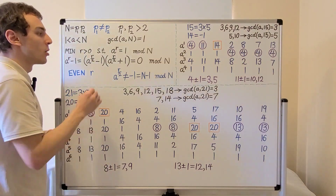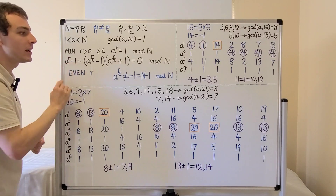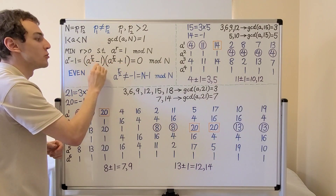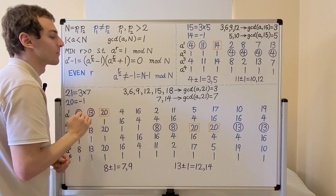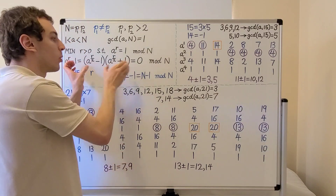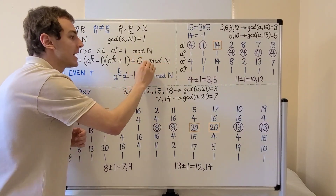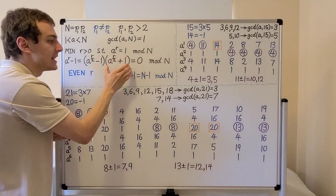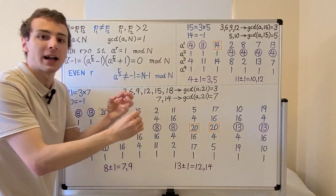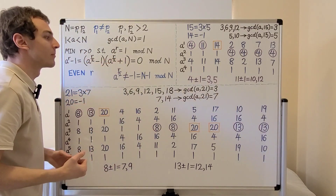Once we have r, we use this relationship to find p1 and p2. We subtract 1 from both sides, giving us a^r minus 1 equals 0 mod n. Then a^r minus 1 can be factored as (a^(r/2) minus 1) times (a^(r/2) plus 1). What we want is for these two factors to not be integer multiples of n individually, but their product to be an integer multiple of n, with p1 and p2 hidden inside these factors.